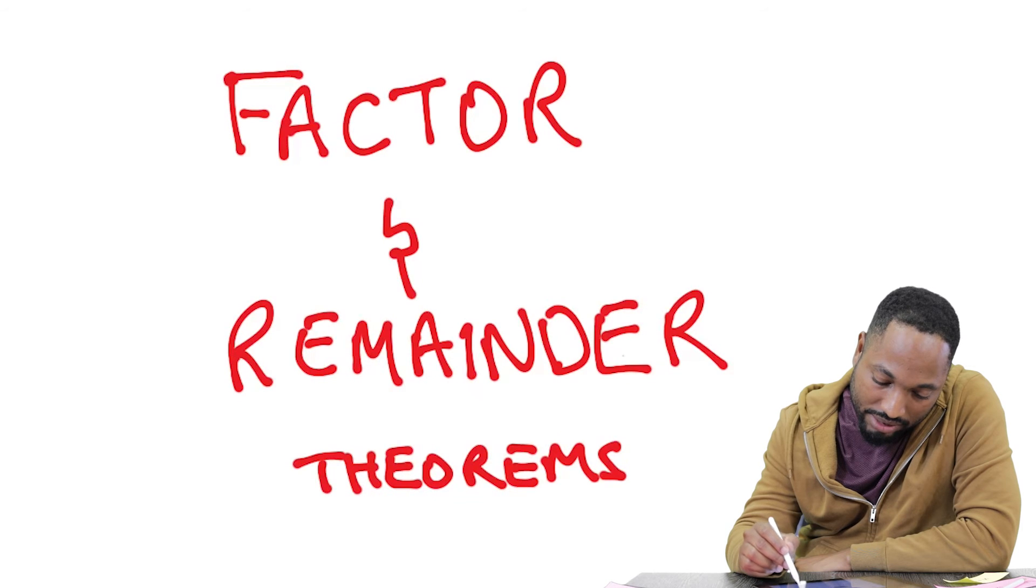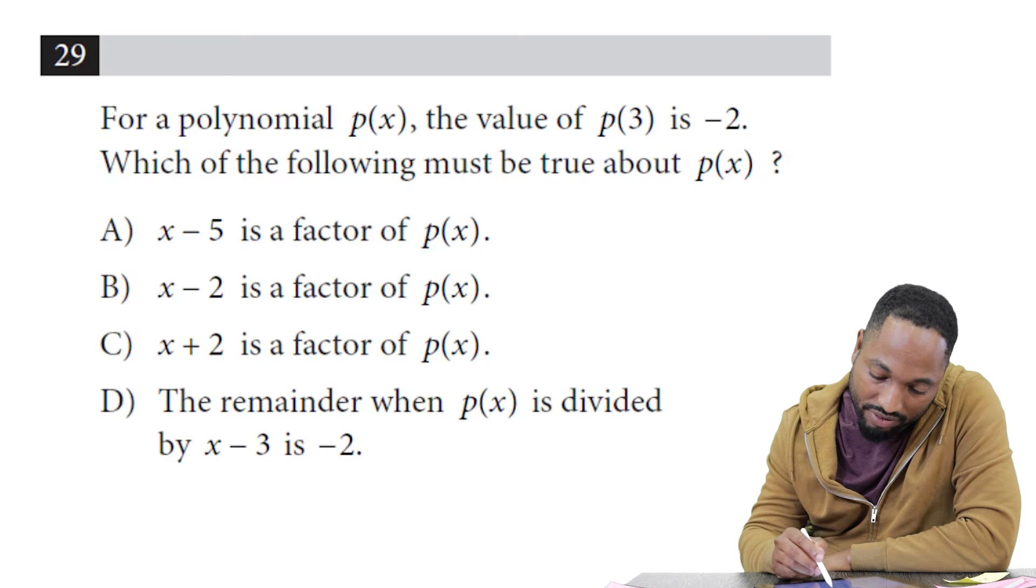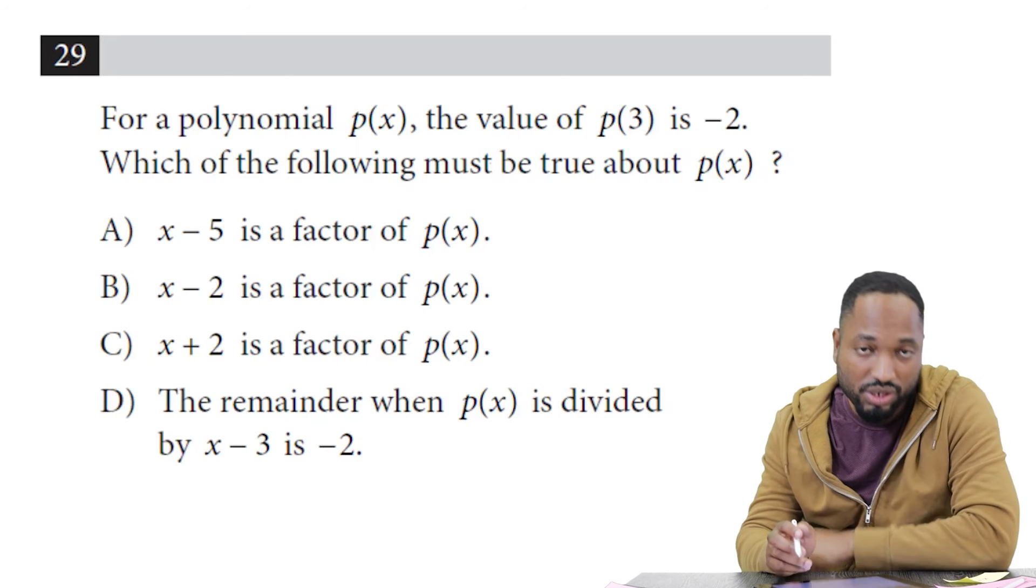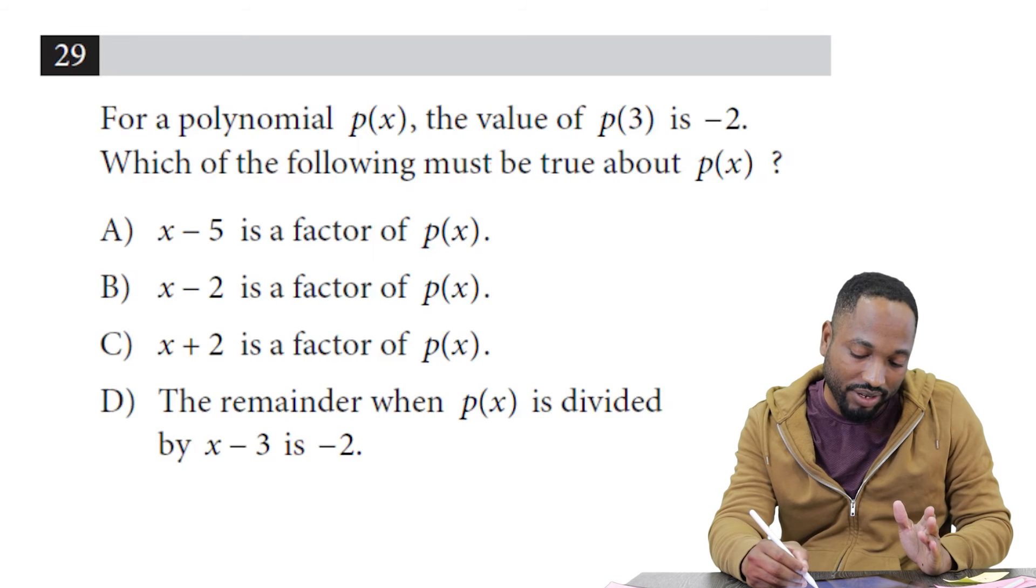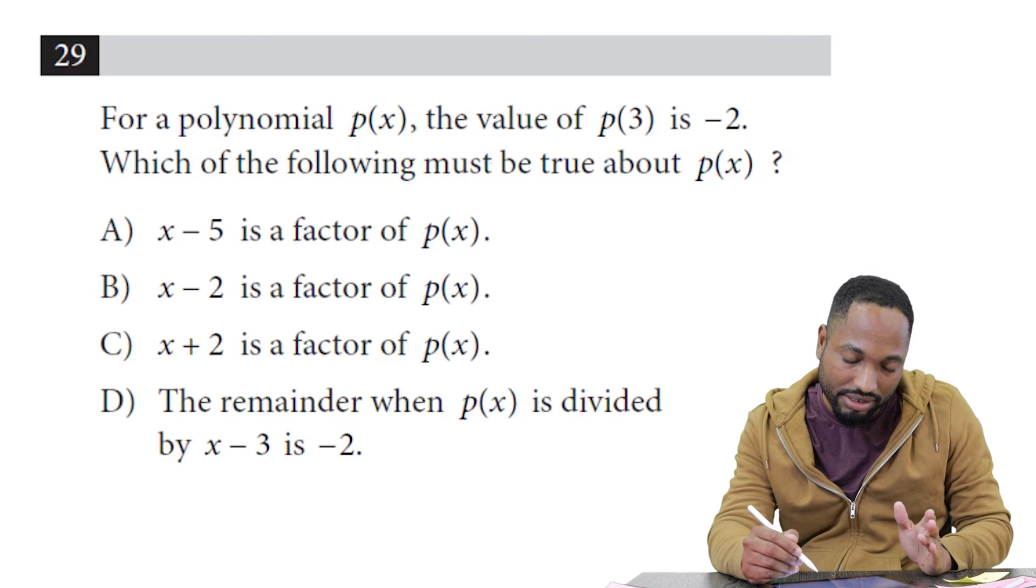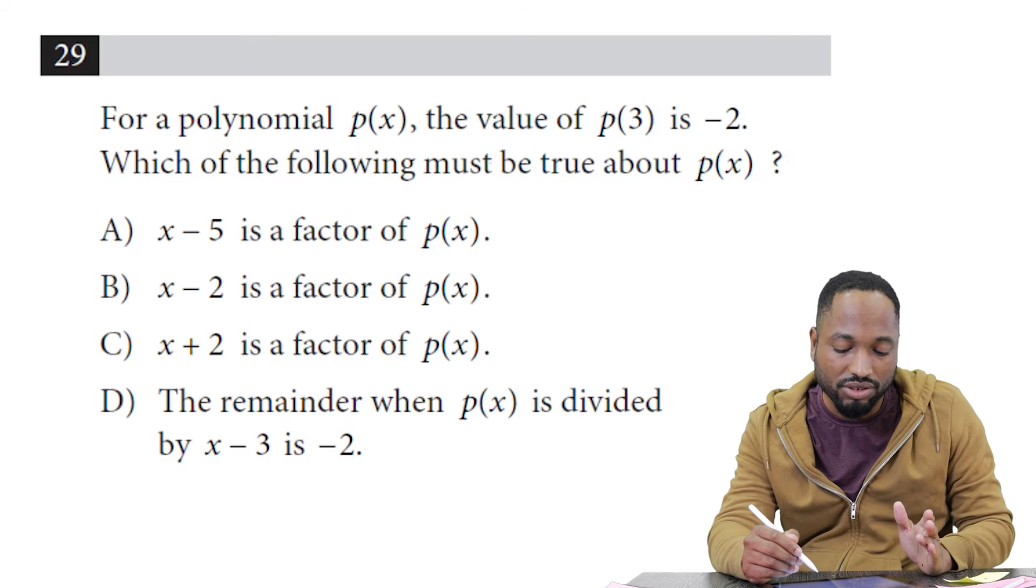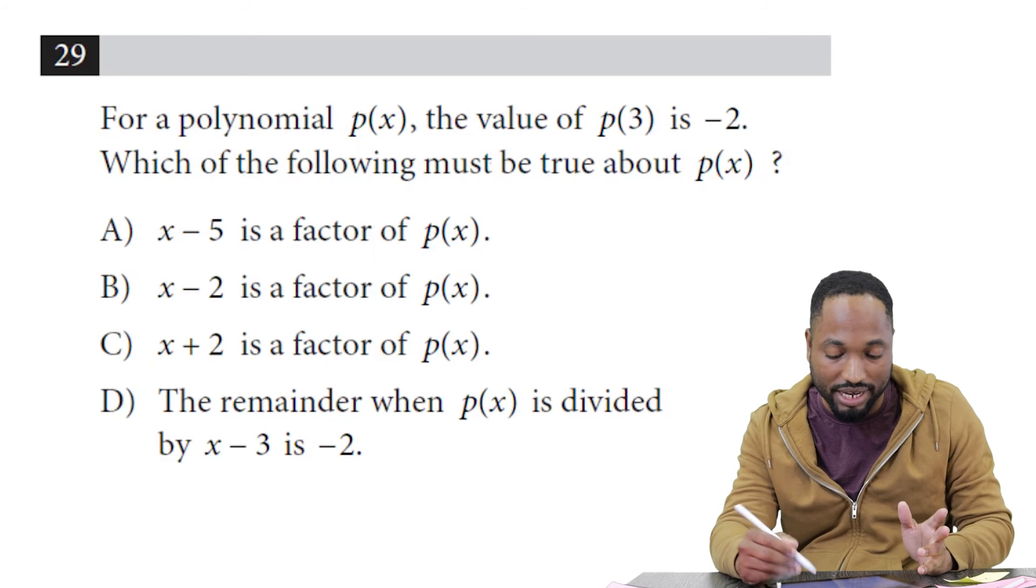So going back to the first question: for a polynomial p(x), the value of p(3) is -2. This one feels a little different again because instead of giving us zero and instead of talking about factors, this is actually talking about remainders.